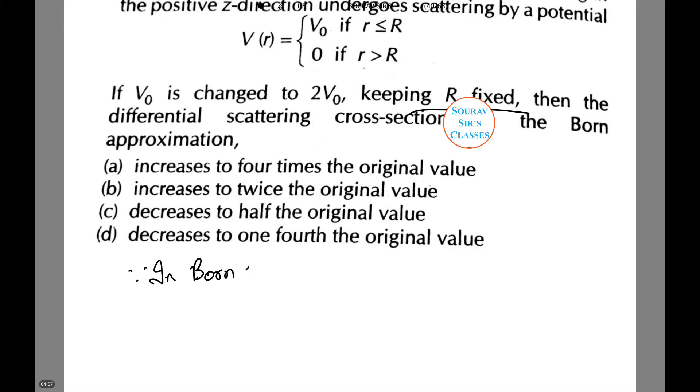In Born's approximation, σₜ is directly proportional to V₀². V₀ becomes 2V₀, and σₜ tends to 4σₜ. Hence, σₜ increases by 4 times. Let's see which option corresponds to it. That is option A.